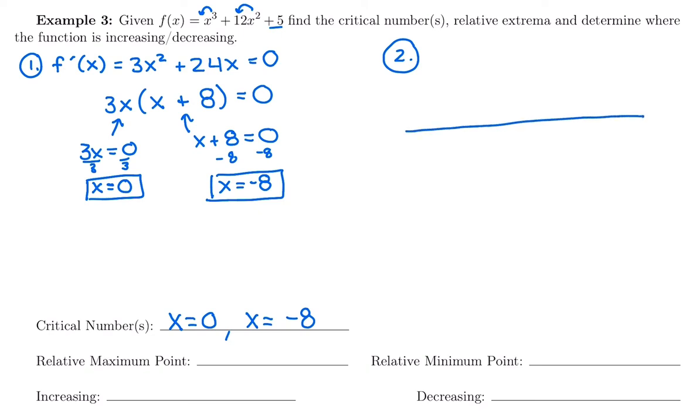The very first thing that goes on your sign chart are those critical numbers. So we have 0 and negative 8. We want to make sure we put them in the correct order. Negative 8 comes first on a number line, and then 0. We're going to label these. These are special. These are the only places where I'm going to switch increasing and decreasing. And these are the only places where I could possibly have relative maximum. Not any of the random test values we're about to choose.